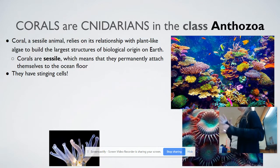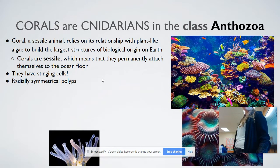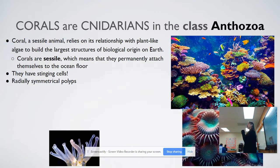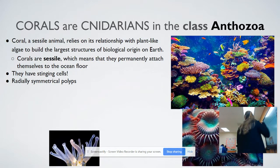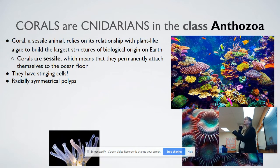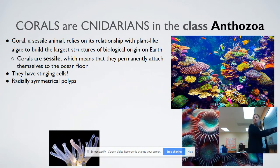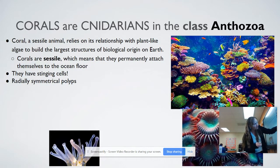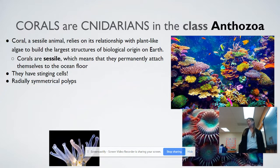Most corals don't sting that badly, but fire coral is quite rough. Corals are radially symmetrical. If you look at a single polyp, they're all radially symmetrical — tentacles arranged in a circle. A lot of students look at a coral colony and think it looks asymmetrical, but if you zoom in on one polyp, it actually has these stinging cells arranged radially. They're small. Each one looks like that.